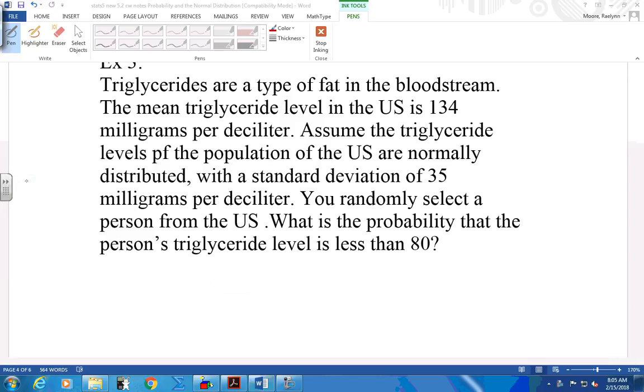Some background information here. Assume that the triglyceride levels of the population are normally distributed. They have to tell you that, or you can't approximate a normal curve. With a standard deviation of 35 mg per deciliter, you randomly select a person from your whole population of the United States. What is the probability that that person has a triglyceride level less than 80?